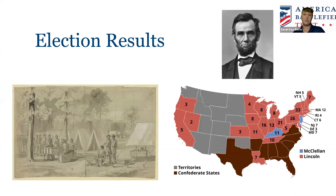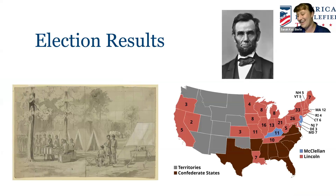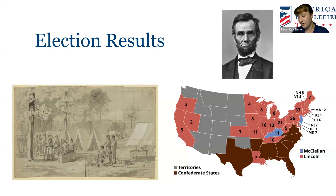What about the election results in 1864? Abraham Lincoln wins the presidency again — he won 55% of the popular vote and gained 212 electoral votes. Of the soldiers who were allowed to vote, Lincoln got 78% of the soldier vote in the 1864 election.